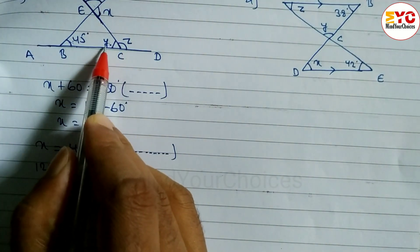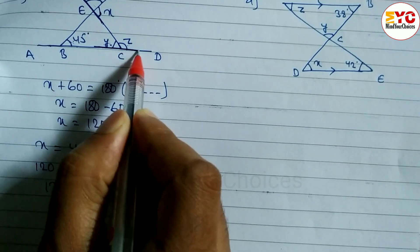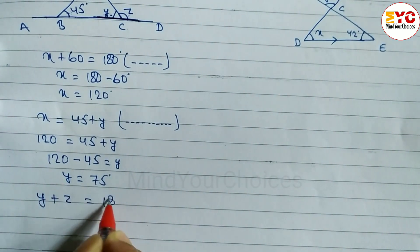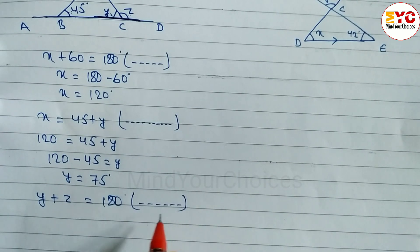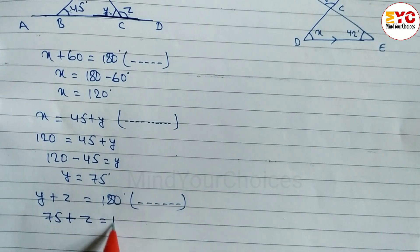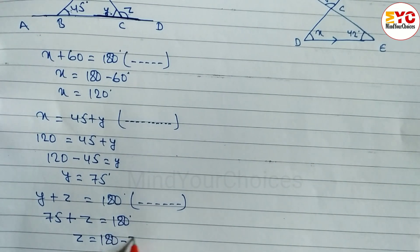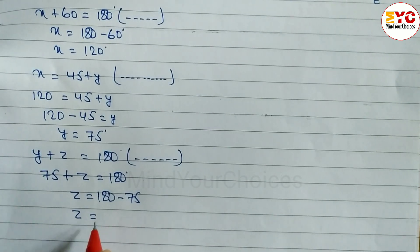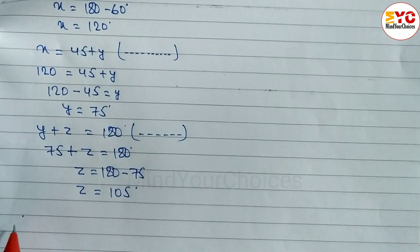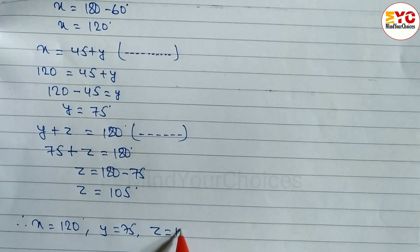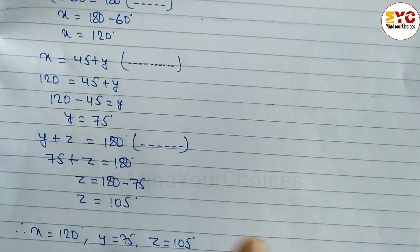Now we have to find out the value of z. Y plus z is equal to 180 degrees — reason: being a straight angle or straight line. Substituting y equal to 75: z is equal to 180 minus 75. Therefore z is equal to 105 degrees. So the value of x is 120, value of y is 75, and value of z is 105.